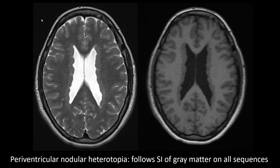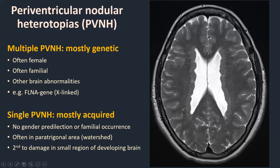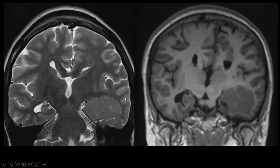The best known is probably a mutation in the filamin A gene, which is located on the X chromosome. These islands of gray matter have the same signal intensity as cerebral cortex on both T2 and T1-weighted images. If you see multiple periventricular nodular heterotopias, it's mostly genetic. If you see a single one, it's mostly acquired, with no gender predilection, no familial occurrence, and these are often located in the peritrigonal region — a watershed, vulnerable region in the embryological brain, probably the result of damage in a small region of the developing brain.